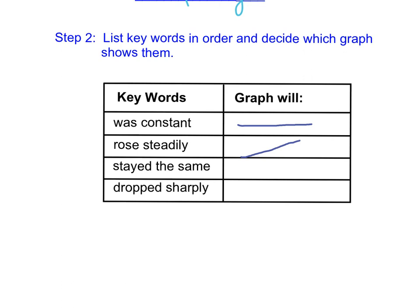'Stayed the same.' Anytime something stays the same as time passes, there's no change. That would be another horizontal example. And then 'dropped sharply' is going to be slanting downwards, something like that. If it was a really sharp drop, it might be more steep like that.